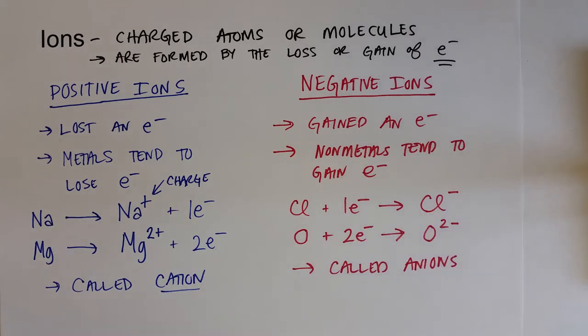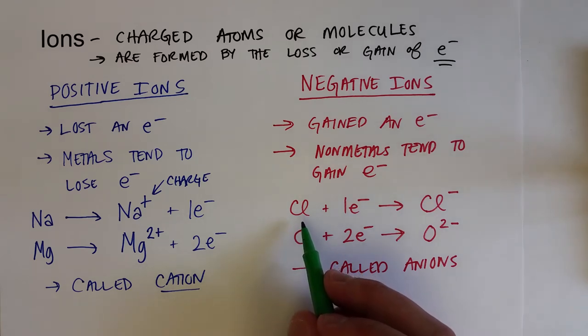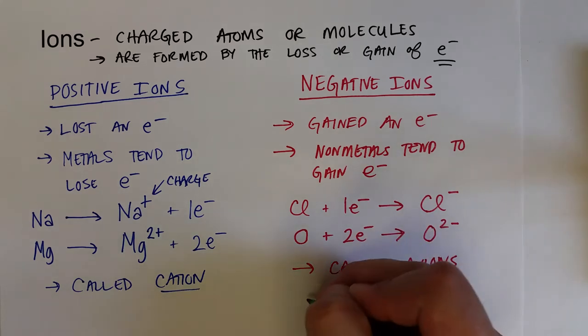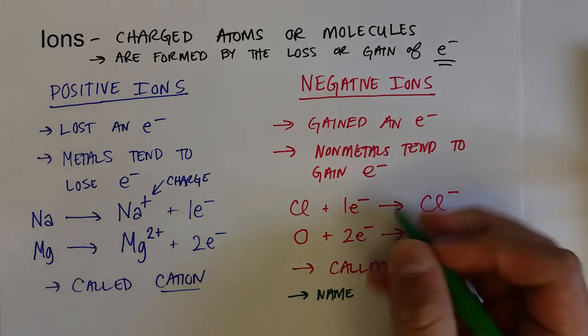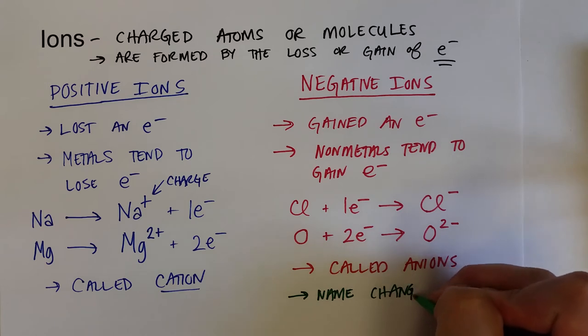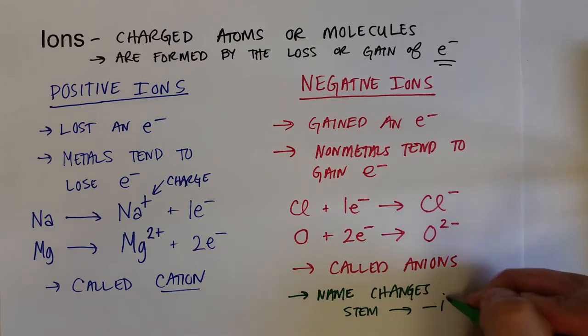If we look on a periodic table of the elements, chlorine, Cl, is called chlorine. And when it's in an ion or compound as an ion, we call it chloride. So the name changes to -ide. The stem of the name changes to -ide.